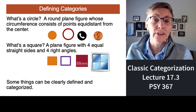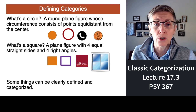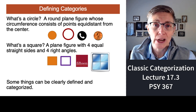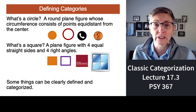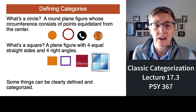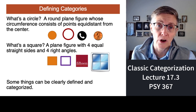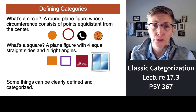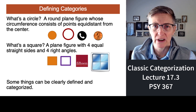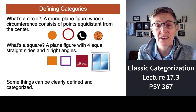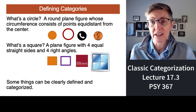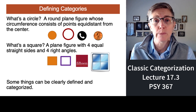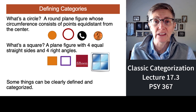That definitional approach does work for some things — geometric shapes, for example. There's a very clear definition of what a circle is, no ambiguity. You either fall in the category of circle or you don't. A square has to have 90-degree corners, four of them, connected by straight lines. Easy.